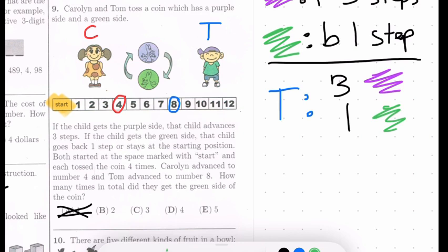Let's write this: Tom got three purples and one green. We know they at least have two green sides in total. That's an important word, let's highlight total. So let's try two. We know Tom got one green, which means Caroline, as per this answer choice, should have also gotten one green. But we already know Caroline does not get one green, otherwise she's not at space number four. So that's gone. If Tom got one green, then Caroline got two greens to go with answer choice C. Let's try that out. Two purples, so you go forward six steps and go back two steps. There we go, that works for Caroline. Six minus two equals four.